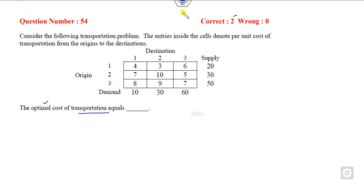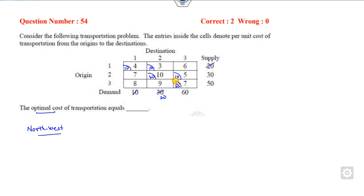Now look at the next example, which is related to the transportation problem — you will get 2 marks. In our last class we already discussed that whenever there is a transportation problem and they ask about the optimal solution, you start from the northwest corner. This value is 10; starting from here, this is again 10, this is 20, this is 10, and this is 50. In order to find the optimal solution, apply the UV method. Starting with u=0: the values come out as 4, 3, 7, minus 2, and 9. We check the non-occupied cells — one value is positive, so this is not optimal.